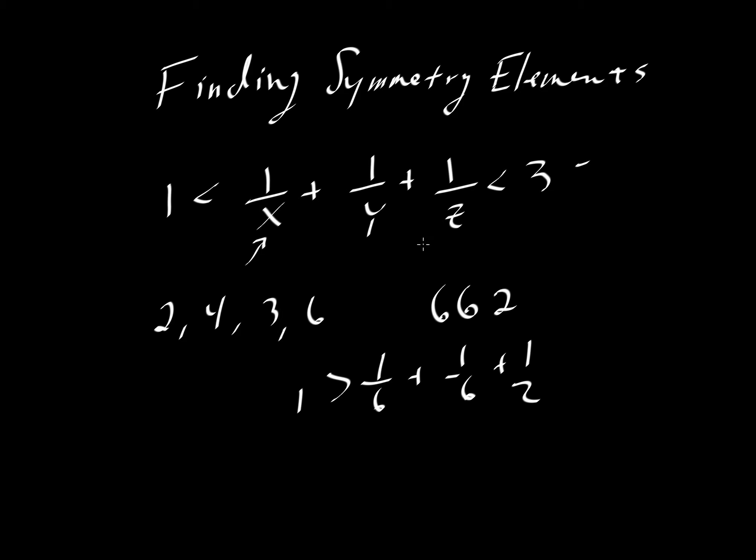There are a couple of other rules we can use. First, I want to show you how this theorem reduces the number of possible combinations. If we have 2, 3, 4, and 6-fold rotational axes, we have four things. Let's say we want to take them three at a time, like we had in our computational example in the previous slide.